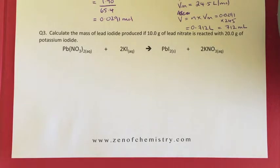Question 3. Calculate the mass of lead iodide produced if 10 grams of lead nitrate is reacted with 20 grams of potassium iodide.